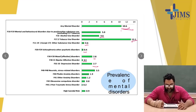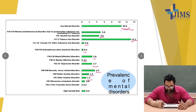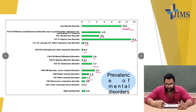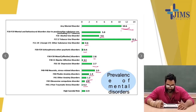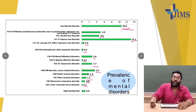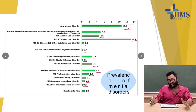Neurotic stress-related disorder was 3.5%, phobic anxiety disorder was 1.9%, other anxiety disorders were 1.2%, OCD was 0.8%, and post-traumatic stress disorder (PTSD) was 0.2%. Suicidal risk was found to be 0.9%.